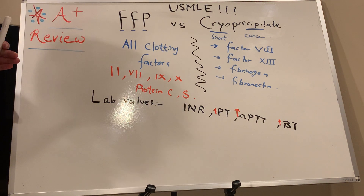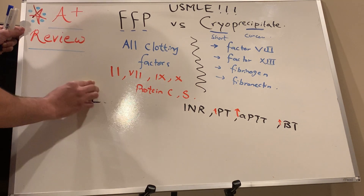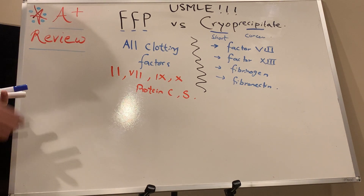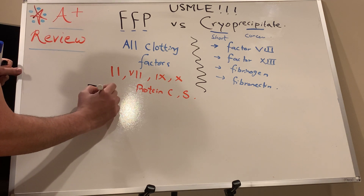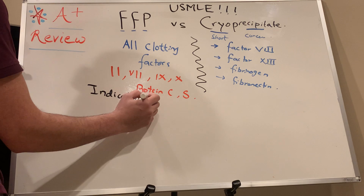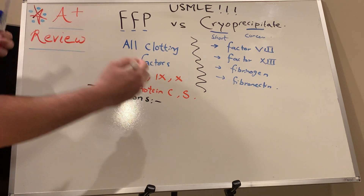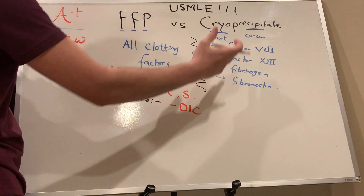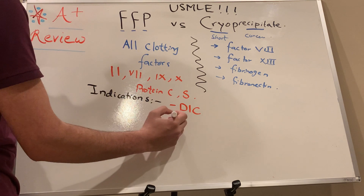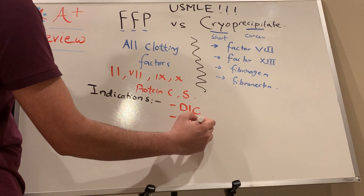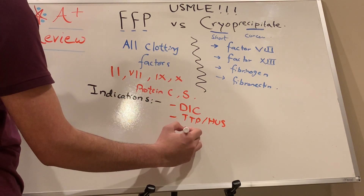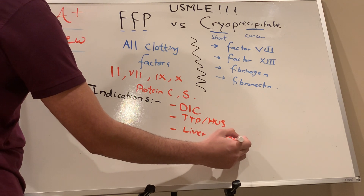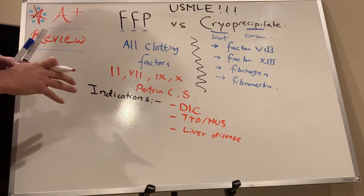The main indications for fresh frozen plasma for the USMLE exam are: DIC — also cryoprecipitate if FFP doesn't work — TTP and HUS, which go hand in hand, liver disease, and multiple clotting factor deficiencies.